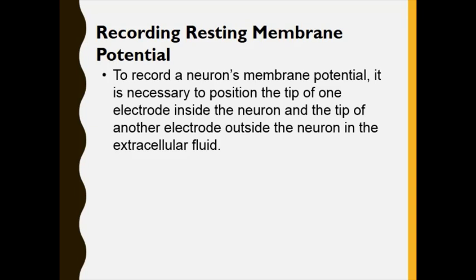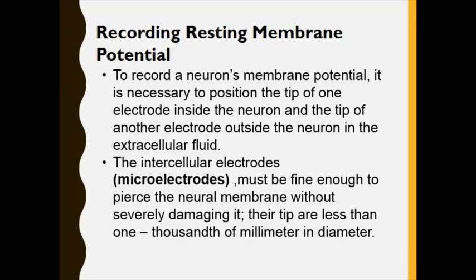An electrode is a machine with two wires — a negative and a positive tip. To record the membrane potential, one tip must penetrate and go inside the neuron, and the other tip remains outside the neuron in the extracellular fluid, so we can see the difference. The intracellular electrode, called the microelectrode, must be fine enough to pierce the neural membrane without severely damaging it.